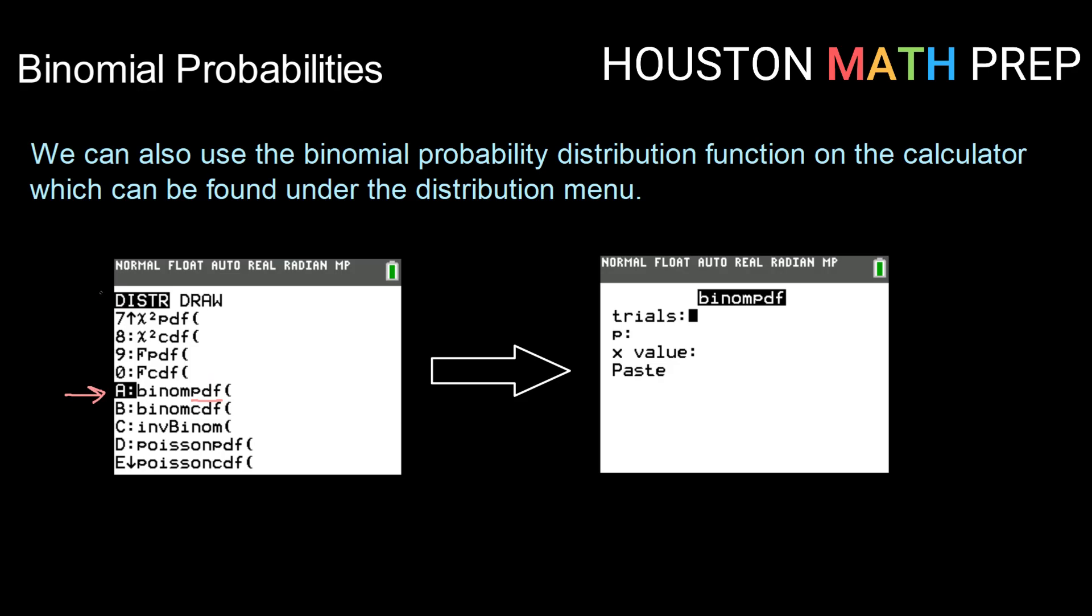If you're using a TI-83 or 84 calculator, the distribution menu can be found by pressing second vars, which is right next to the clear button. When you bring up that distribution menu, you won't immediately see binomial pdf. You need to scroll down a little to find it.